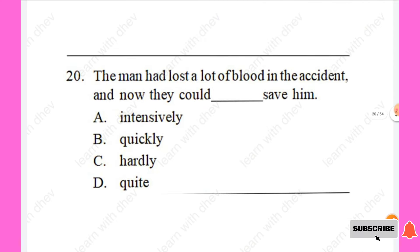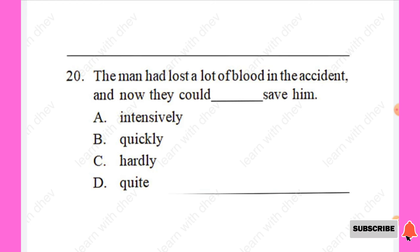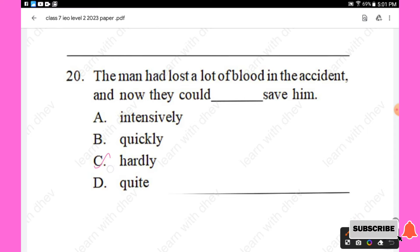Question 20: The man had lost a lot of blood in the accident and now they could — save him. Options are: intensively, quickly, hardly, quiet. The right answer is 'hardly' — they could hardly save him. Option C is the right answer.